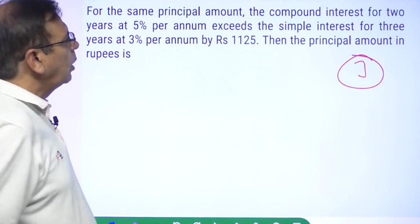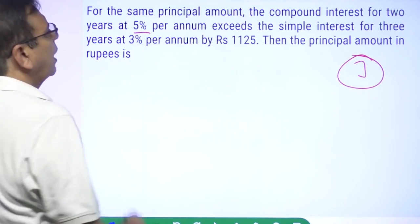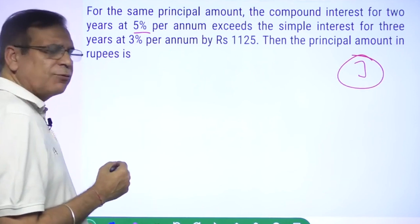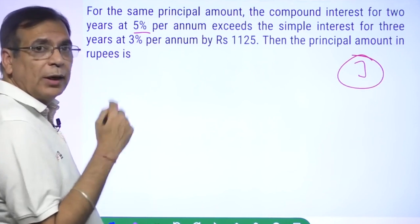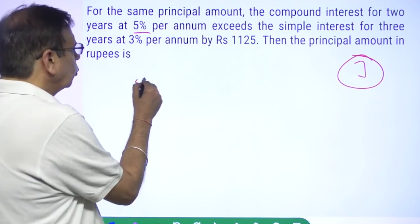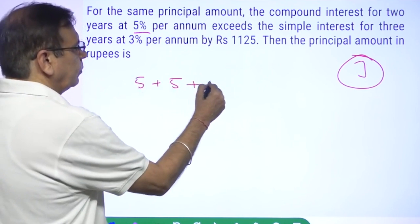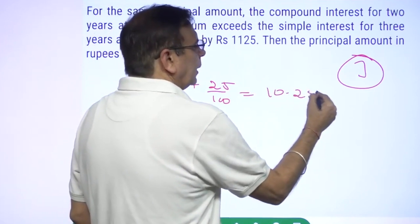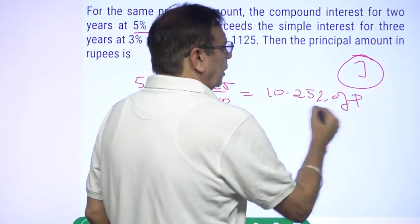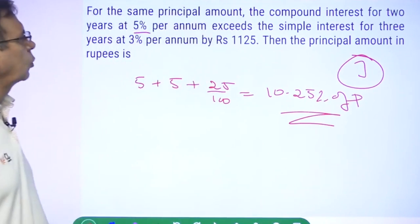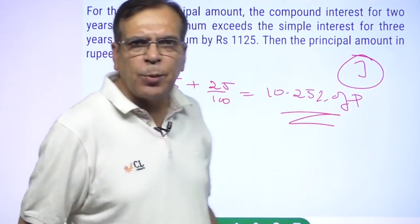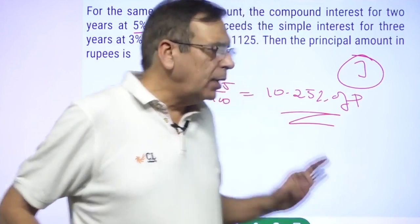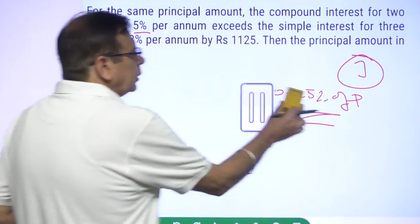For the same principal amount, compound interest for two years at 5% per annum — what will be the total interest for two years? It will be two successive increments of 5%. The interest will be 10.25% of the principal. So if it is two successive increments of 8%, it is 16.64% of the principal. Remember: successive increments and compounding are the same.